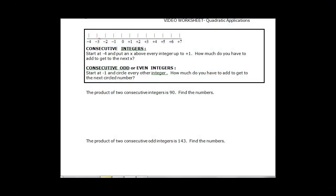This video will talk about consecutive integers and applications of quadratics. Consecutive integers would be like starting here at negative 4, and then we want to put an X above every number or integer up to 1, just for examples.